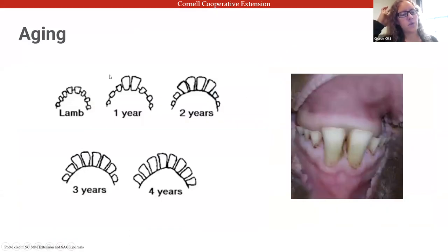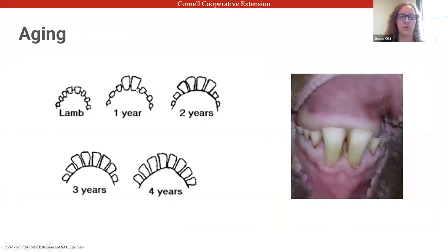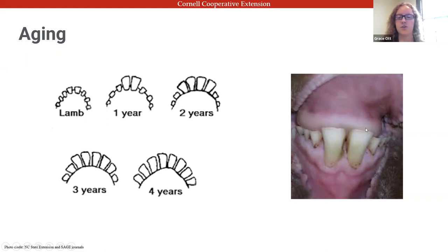One useful technique is aging sheep by looking at their mouth. All lambs and kids are born with small milk teeth, which fall out and are replaced by larger permanent incisors as they age — roughly one new pair of incisors per year until they have a full set of eight at age four. Note they also have no upper front teeth but do have upper molars for chewing. An animal with one large incisor and smaller milk teeth remaining beside it is approximately one year old.